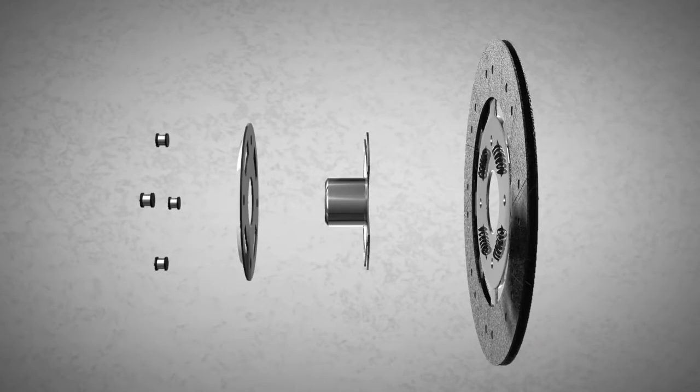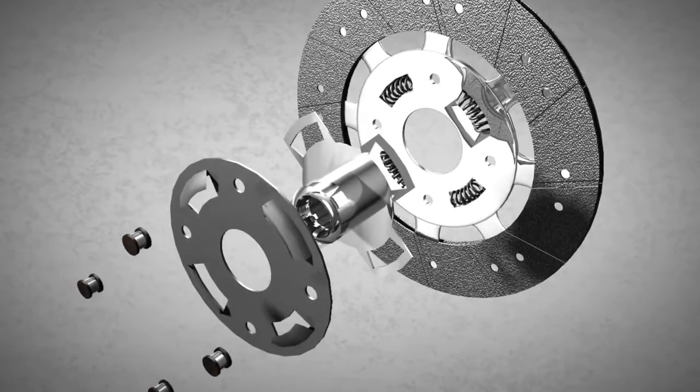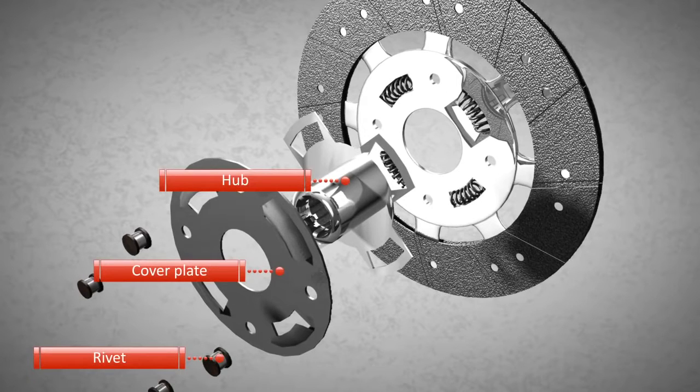The clutch disc is made of several components, of which the important ones are the hub, which is riveted to the disc with a cover plate, and the friction material installed on both sides.